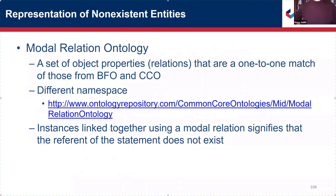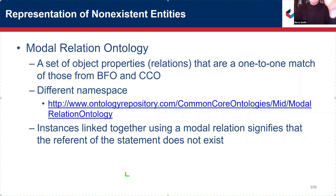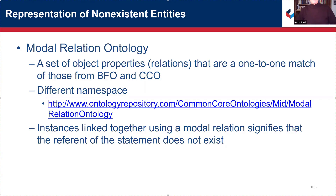What the modal relation ontology does is the following: we create a copy of all the relations in BFO and CCO, but it is a different relation with a different namespace. When we use relational expressions from the modal relation ontology, the ontological commitment to the existence of the reference of the corresponding statements goes away. So we can make all the comparisons that we want and create sentences which look very much like sentences about real objects. But because we're using the modal relation ontology, we cannot infer that those real objects exist, in the way that we can always infer they exist when we use the plain vanilla relation ontology of which the modal relations ontology is a copy.